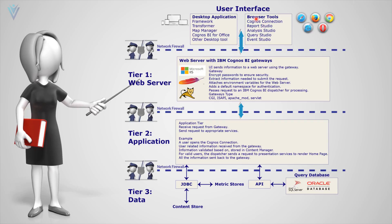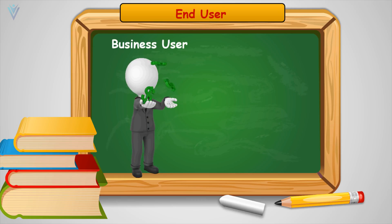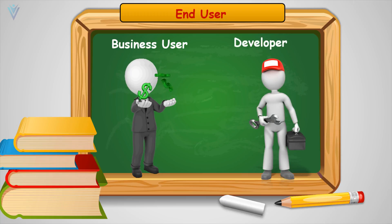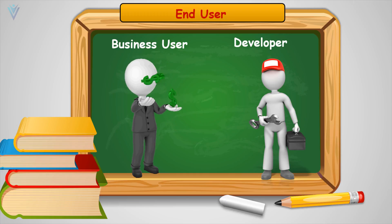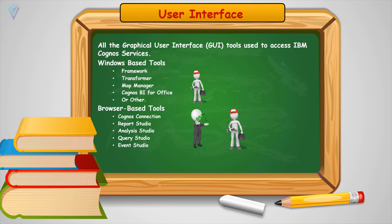Now let's discuss about the end user. The end user may be a business user, who is only interested in facts, figures, and reports. The next user is a developer, who is responsible for creating the facts, figures, and reports. For a developer we may need to provide access on all the tools, but for a business user we only need to provide access on IBM Cognos Connection. This is based on the scenarios.